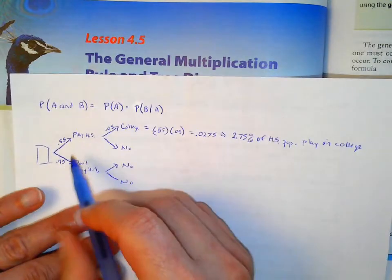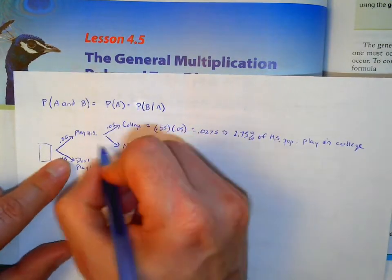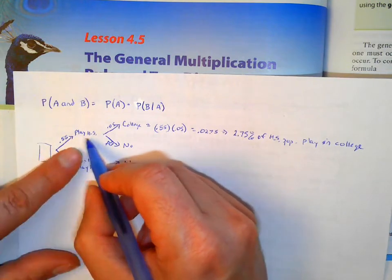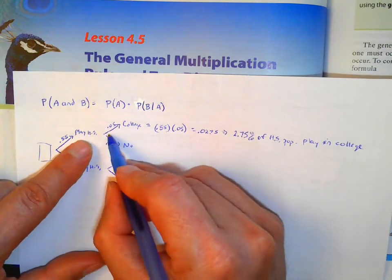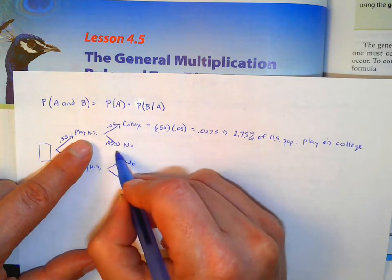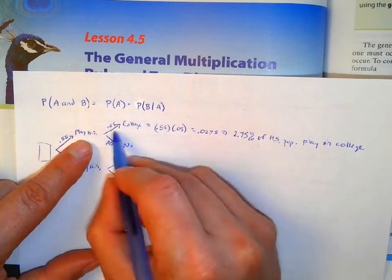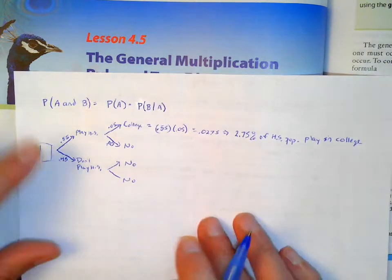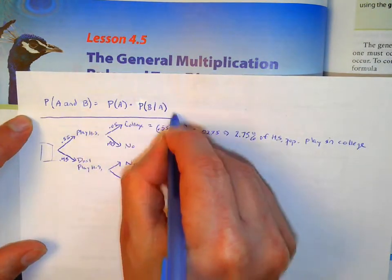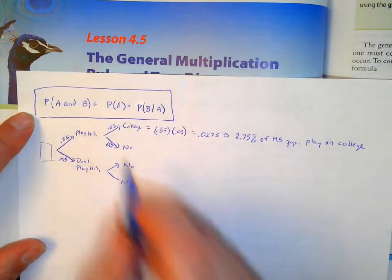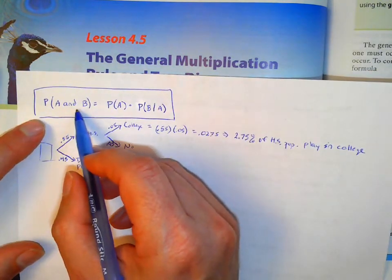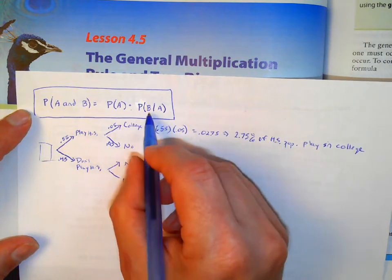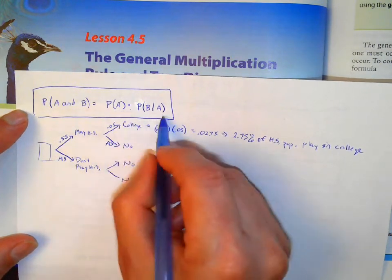So it's a conditional: 55% play in high school, and of those students 5% play in college, 95% wouldn't. You can multiply those two things — this event and this event happening. Our general rule for AND statements is: the probability of event A and event B happening is the probability of A times the probability of B given that A has already happened.